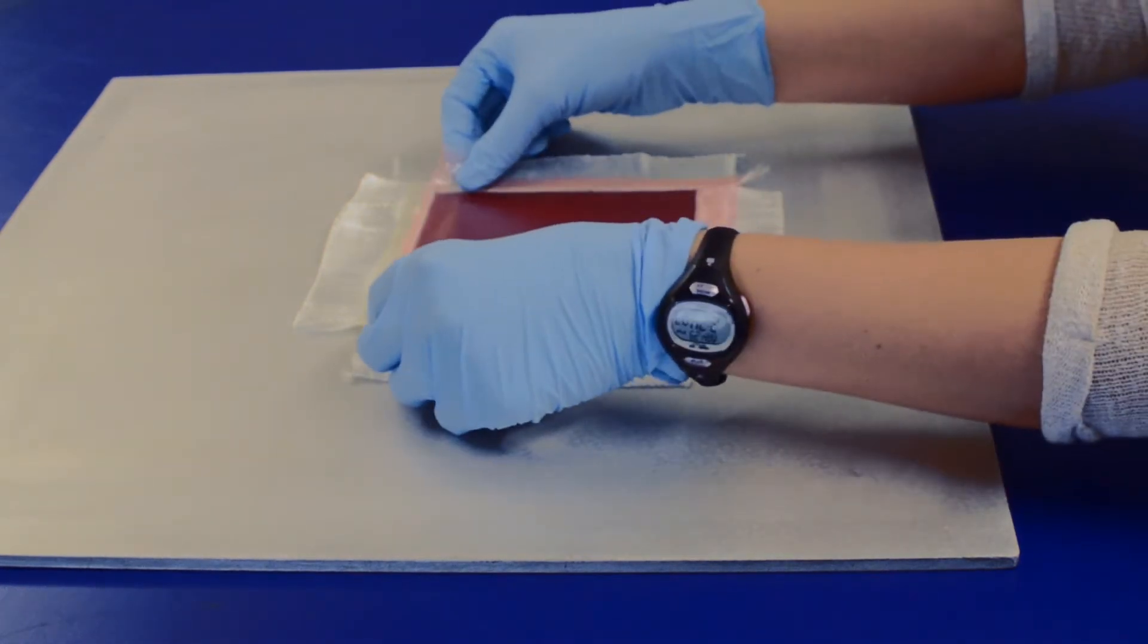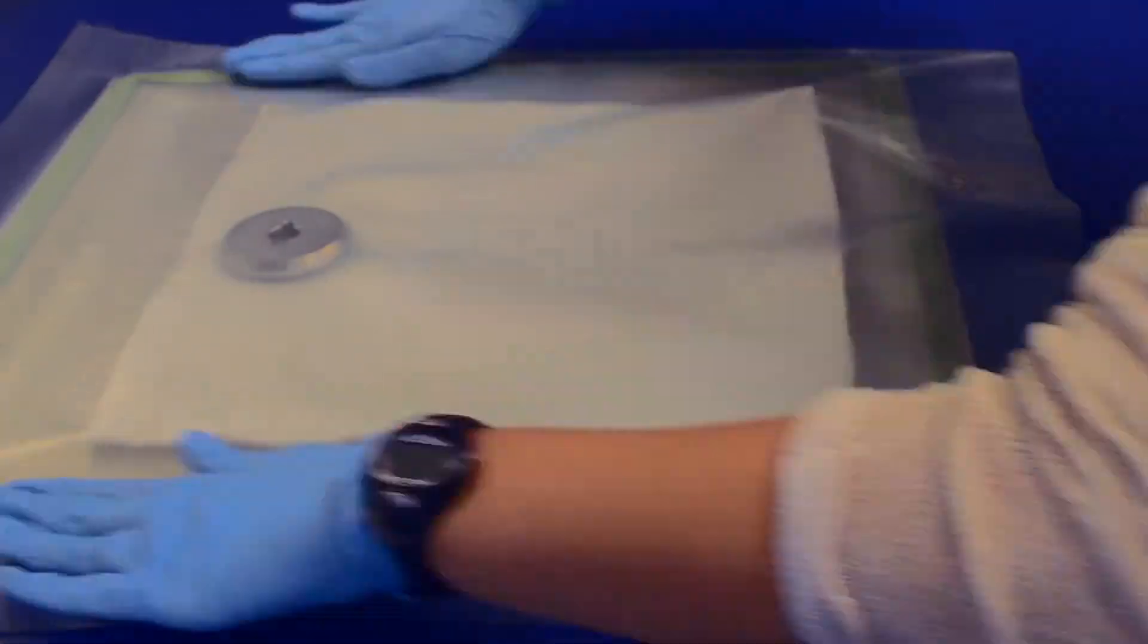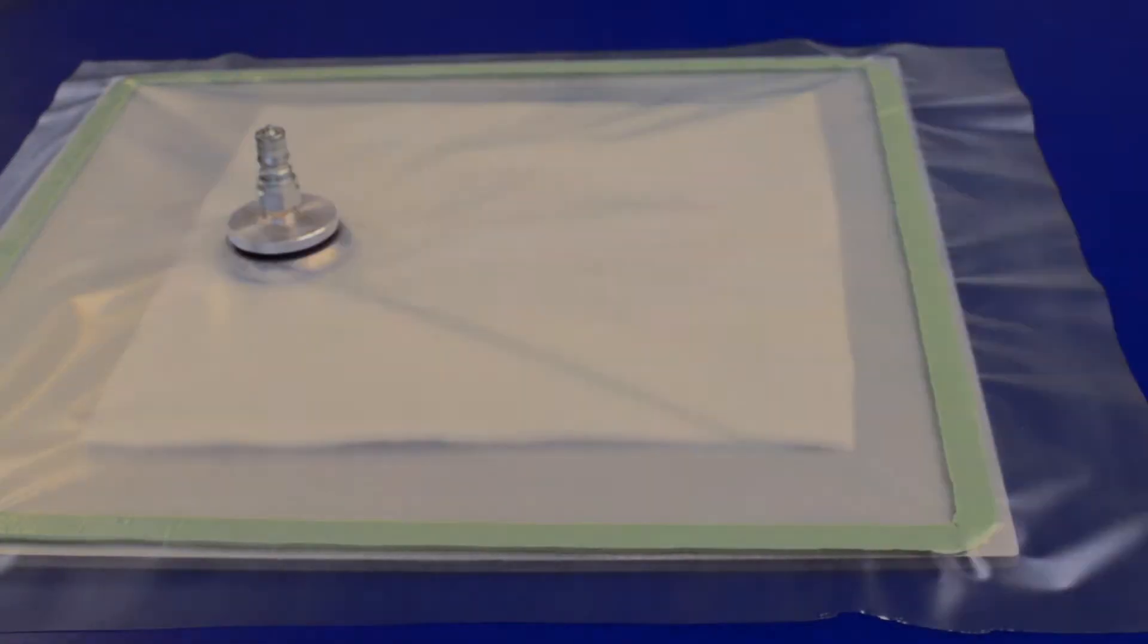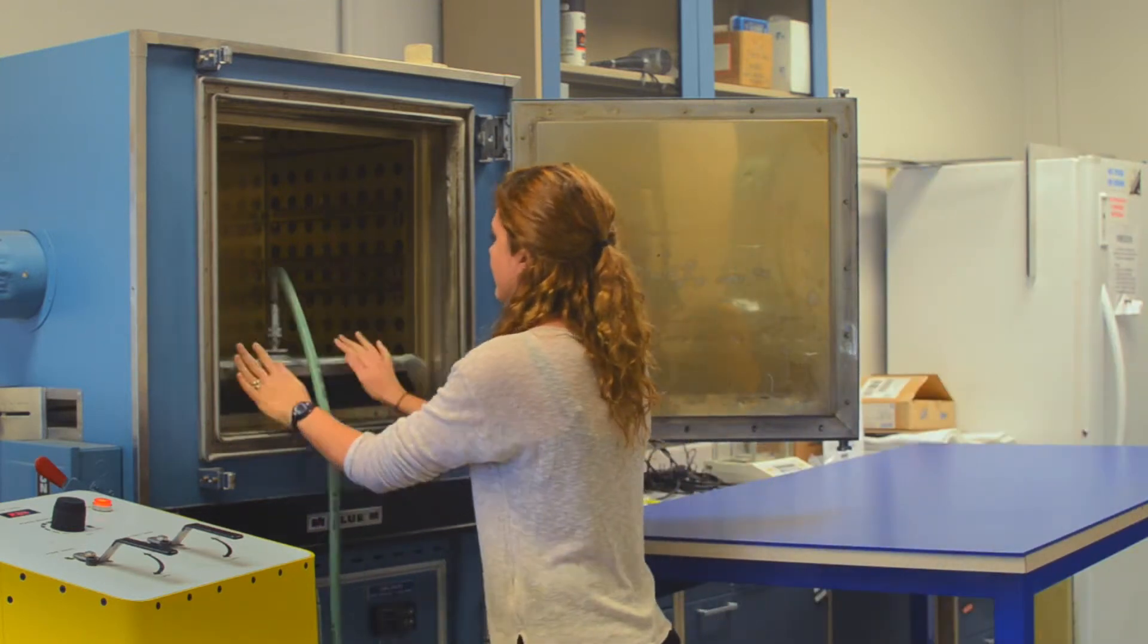Then, a release film is placed on top and breather on top of that. Finally, a vacuum bag is sealed over the entire assembly and vacuum is applied to the whole system before putting it in the oven to cure at an elevated temperature.